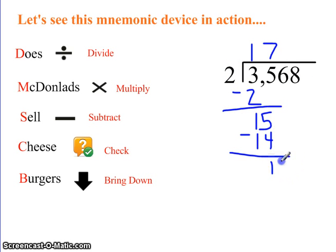Now I'm going to bring down my next number, which is 6. I'm going to ask myself, how many times does 2 go into 16? It goes 8 times. 8 times 2 is 16. Subtract. 16 minus 16 is 0. 0 is less than 2.